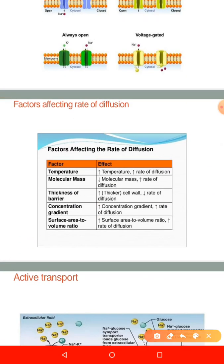What factors affect the rate of diffusion? First, temperature: whenever temperature increases, the rate of diffusion increases, because the diffusing particles acquire kinetic energy. Second, molecular mass: whenever there is a decrease in molecular mass, the rate of diffusion increases. Small particles have a low molecular mass, and therefore diffuse at a faster rate.